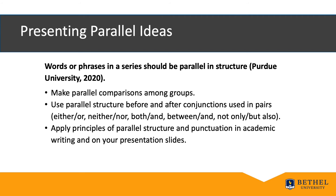Follow APA guidelines for displaying lists. Use numbered lists to display complete sentences — begin each item with a capital letter and end with a period. However, if a numbered list connotes unwanted ordinal position, you can use a bulleted list. Use bulleted lists for items and phrases — begin each item with a lowercase letter and don't end with a period. Remember to cite your sources on a final slide with all the sources you referred to in your presentation.